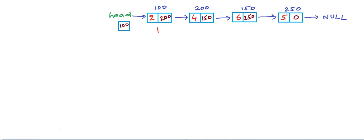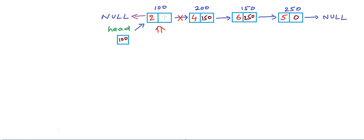We will start at the first node. At each step we want to reverse the link, making the node point to the previous node instead of the next node. For the first node, there is no previous node, so the previous node is null. We want to cut the existing link and build a link to null, so we simply change the address field to zero, and we have reversed the link part of this particular node. Now we will go to the next node. The question would be: how do we go to the next node if we have broken this link? We will come back to that in our implementation details.